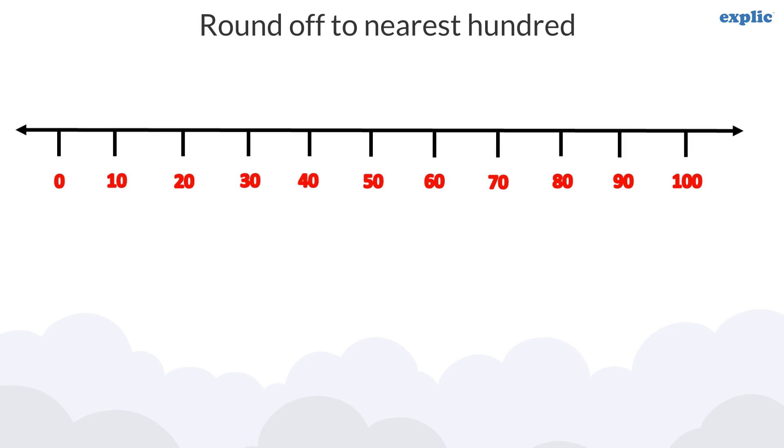In the same way, to round off the number to the nearest hundred, draw the number line from 0 to 100. If the number is between 0 to less than 50, the nearest hundred is 0. And if the number is between 50 to 100, the nearest hundred is 100.